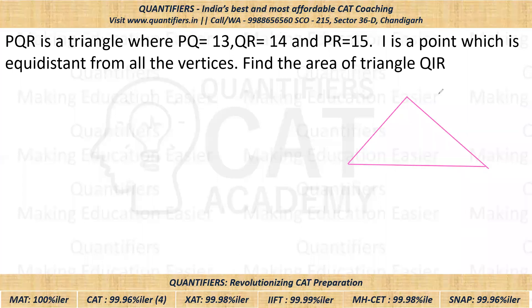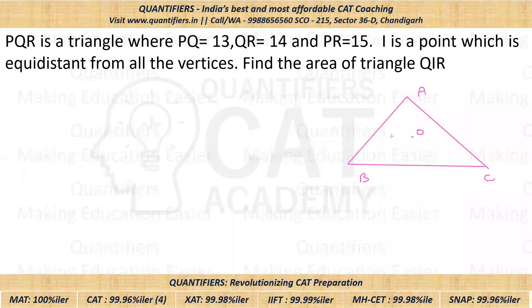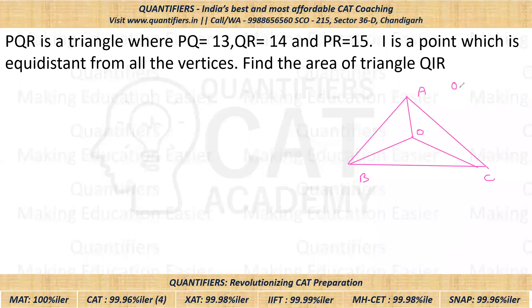If we take a triangle ABC and there is a point O inside the triangle, and this point O is equidistant from all the vertices — that means OA = OB = OC — then this particular point O is known as the circumcenter.